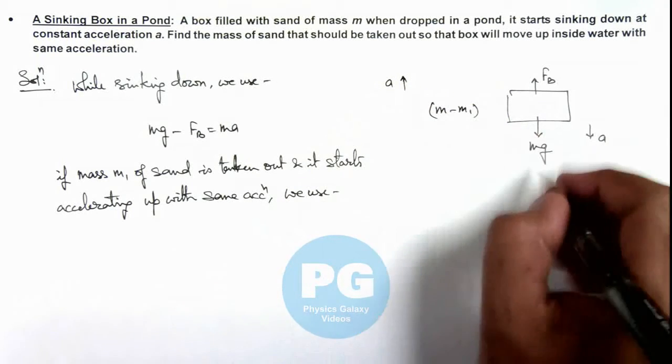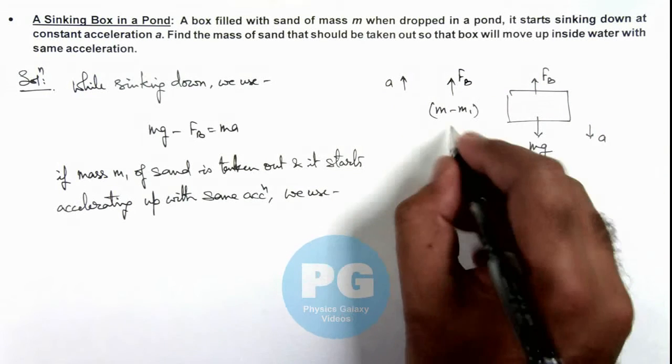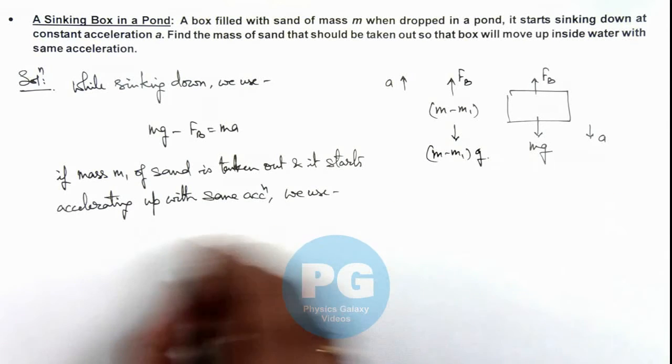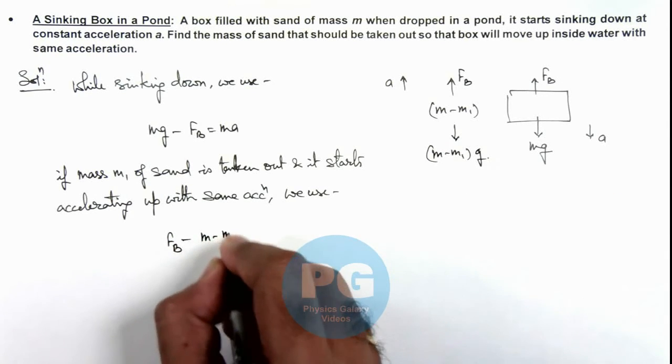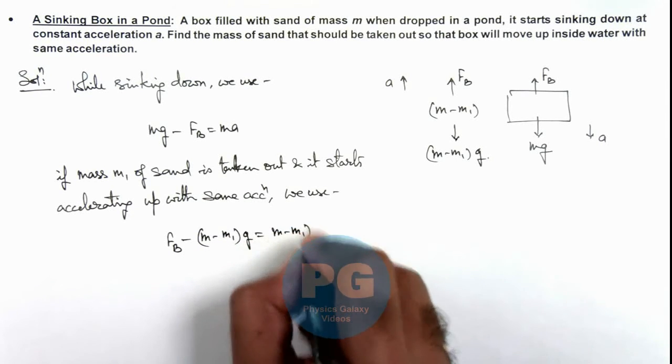As the size of box is same, it will experience the same buoyant force in upward direction, but the weight is reduced to (m minus m1)g. So the equation of motion we can write fb minus (m minus m1) times g is equal to (m minus m1) ay.